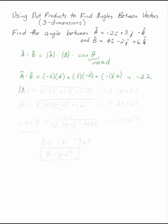We can find the magnitude of each of the vectors using the Pythagorean theorem. Minus 2 squared plus 3 squared plus minus 1 squared. This gives you 3.741657.